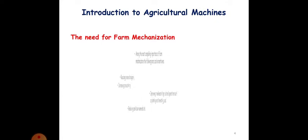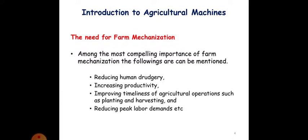What is the need of farm mechanization? The basic need of farm mechanization is among the most compelling importance of farm implements. Farm mechanization has following importance: reducing human drudgery, increasing productivity, improving timeliness of agricultural operations such as planting and harvesting, and reducing the peak labor demands.